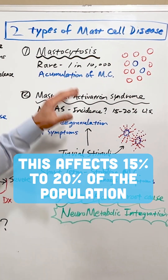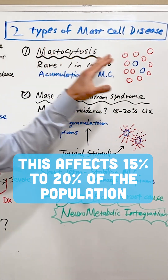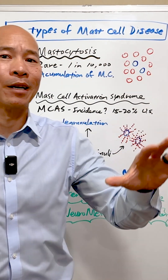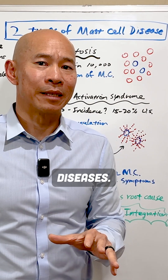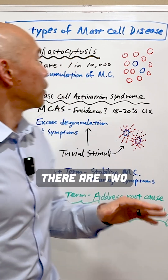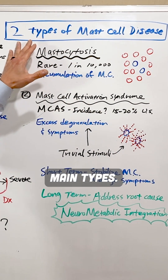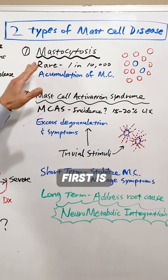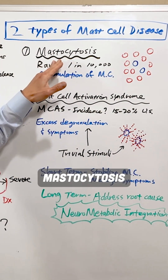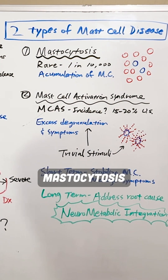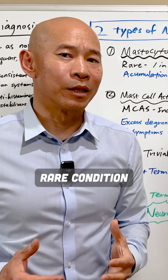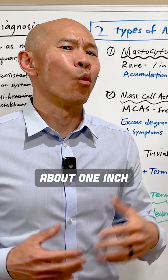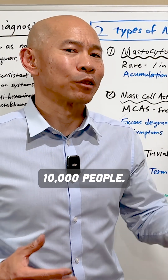Next, we want to talk about the different kinds of mast cell activation diseases. There are two main types. The first is called mastocytosis. This is a rare condition that happens in about one in 10,000 people.